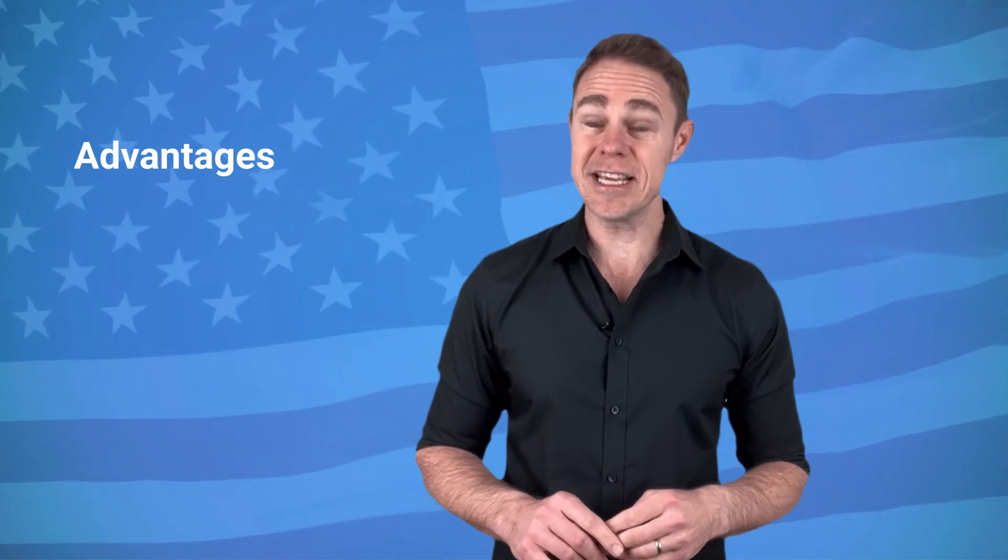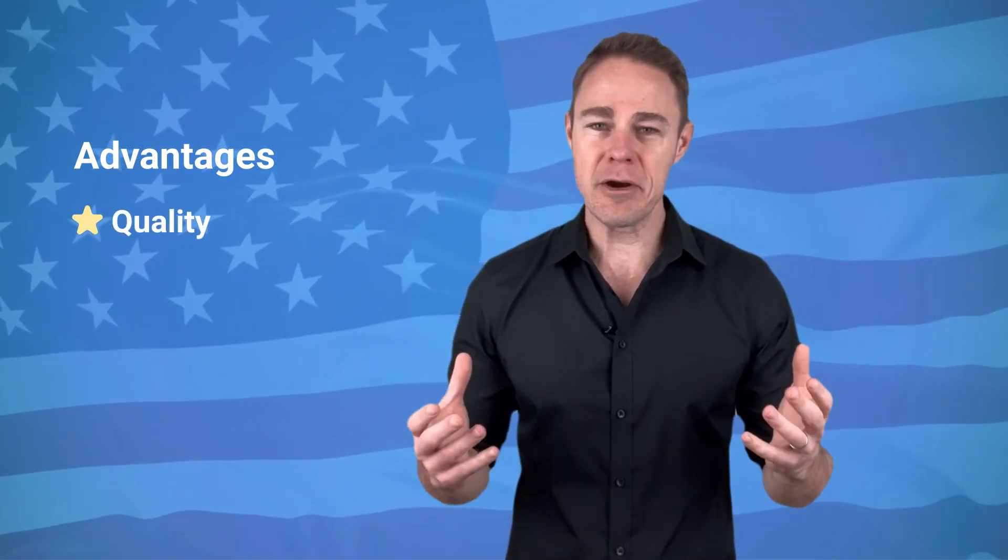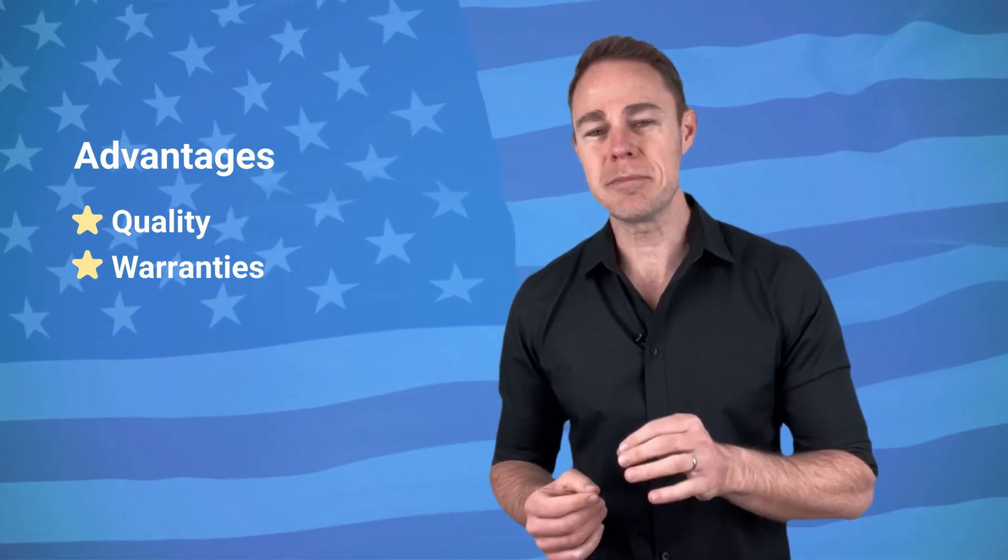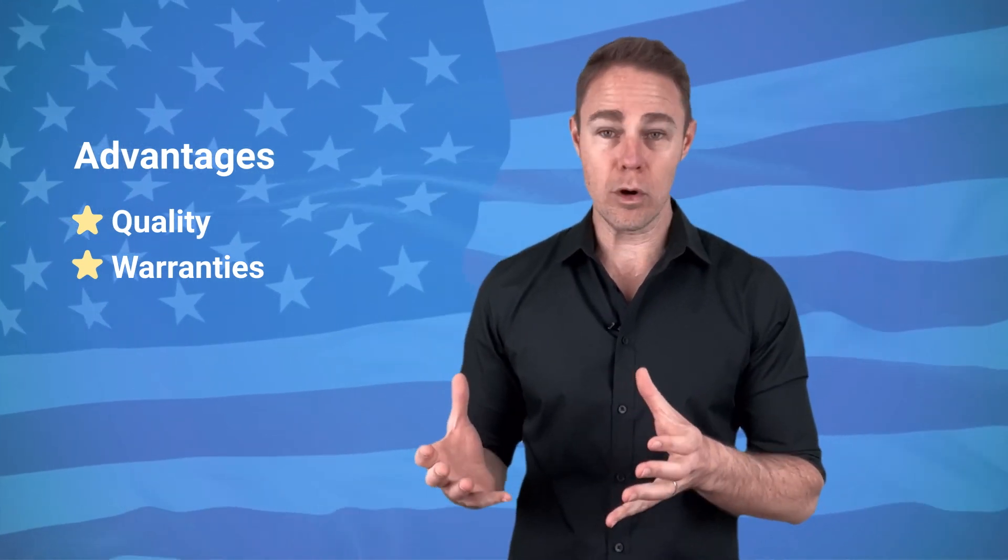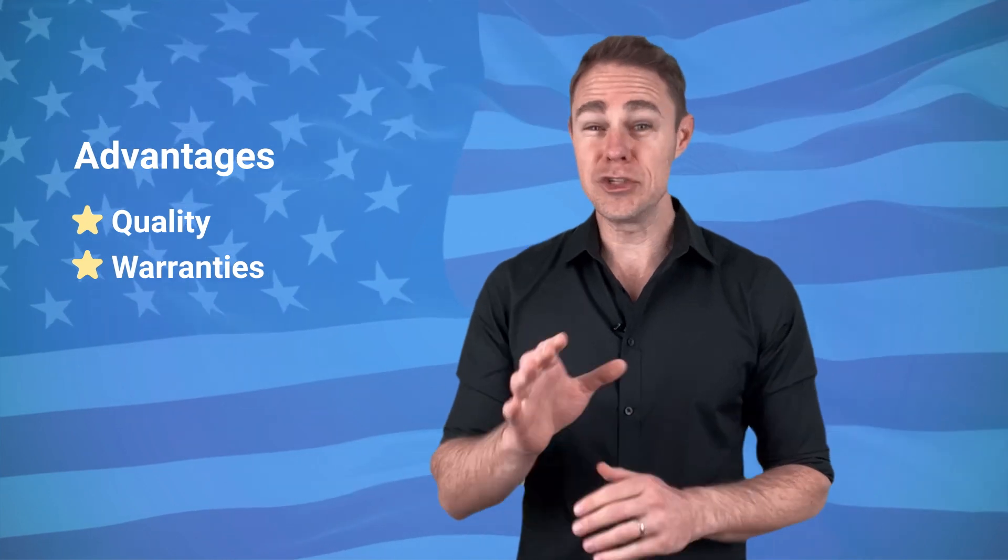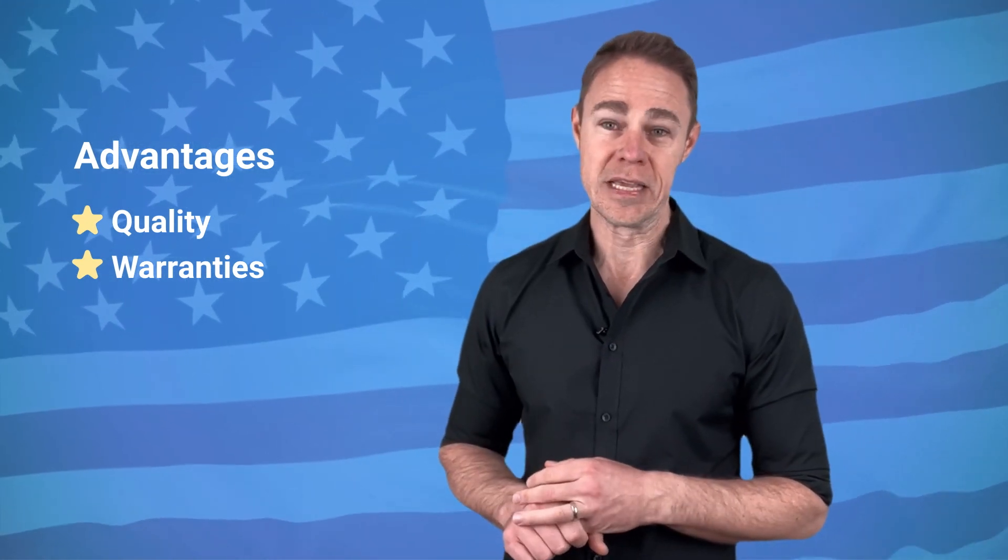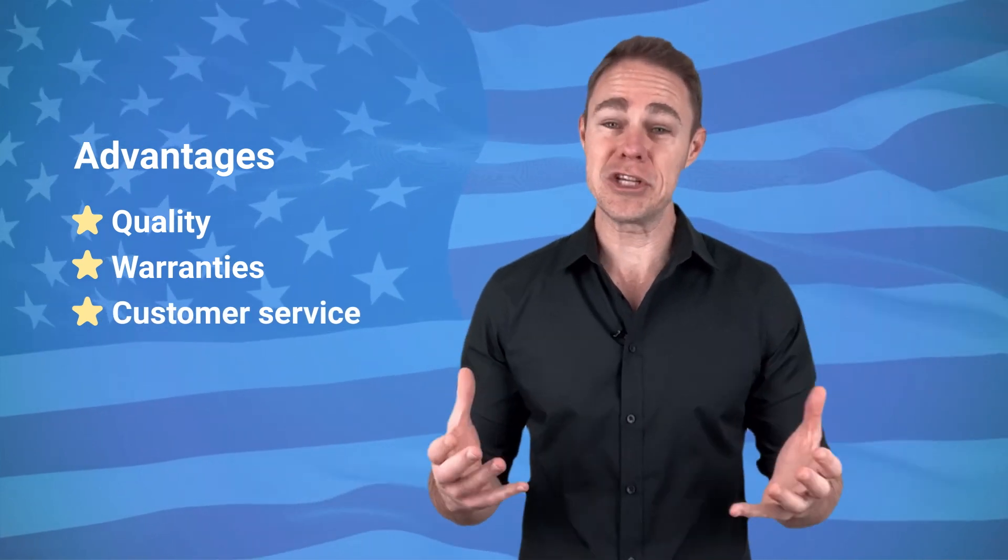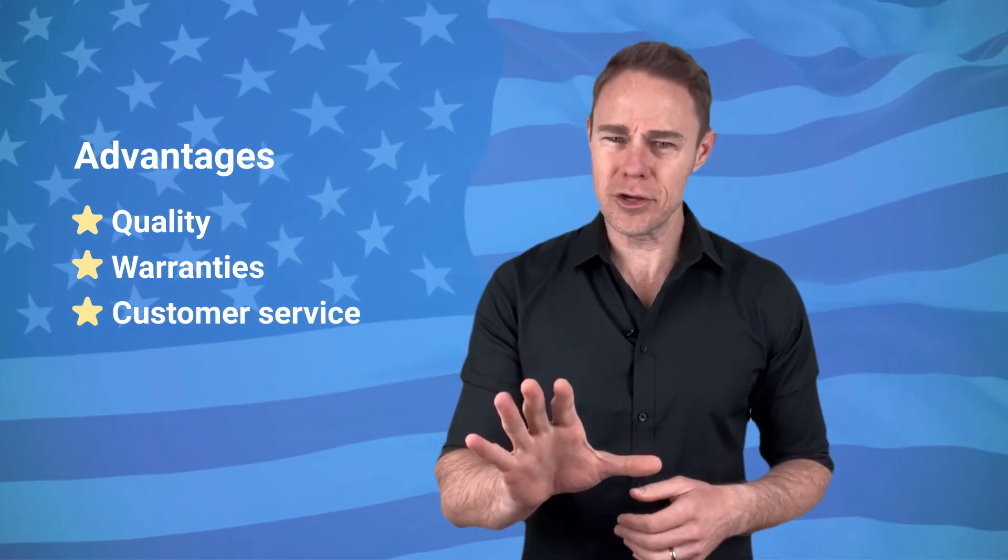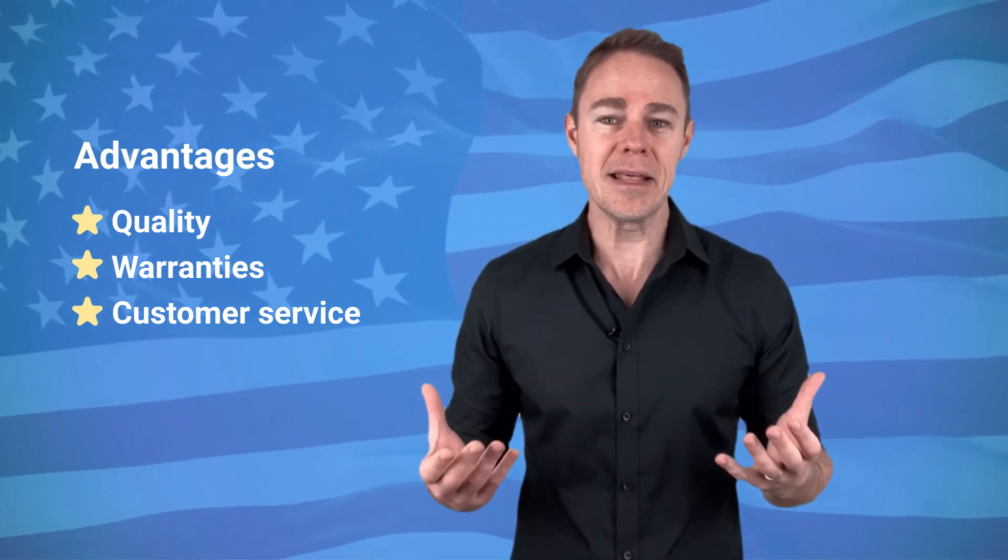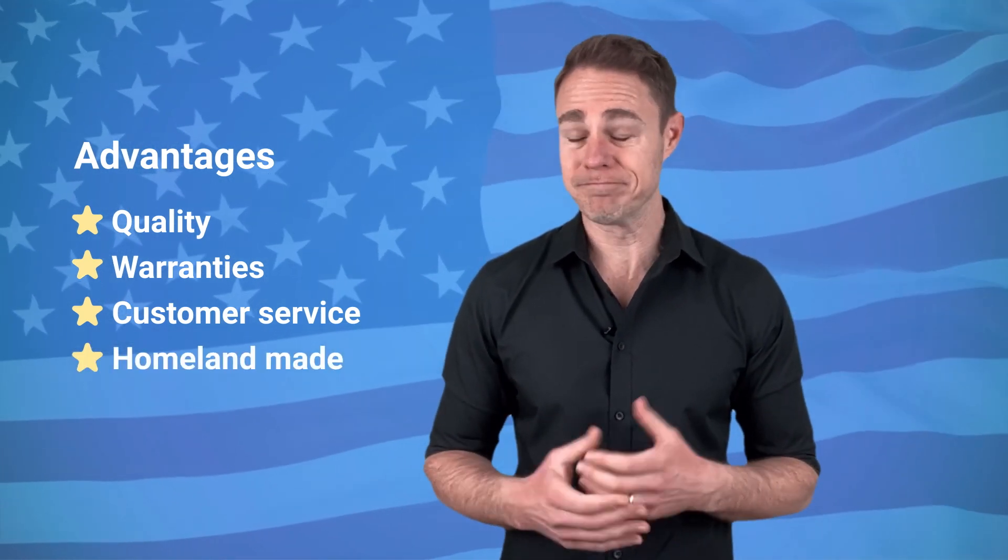But what about the advantages? Well, the quality of American-made panels is higher on average, and American brands sometimes offer better warranties than most Chinese companies. With Asian manufacturers, a 12-year product warranty is the most common, whilst US brands lean more into the 25-year warranty category. Customer service is much easier to get too, not that solar owners need it that often. And maybe there's just a certain comfort in knowing that you buy things made by your fellow countrymen.